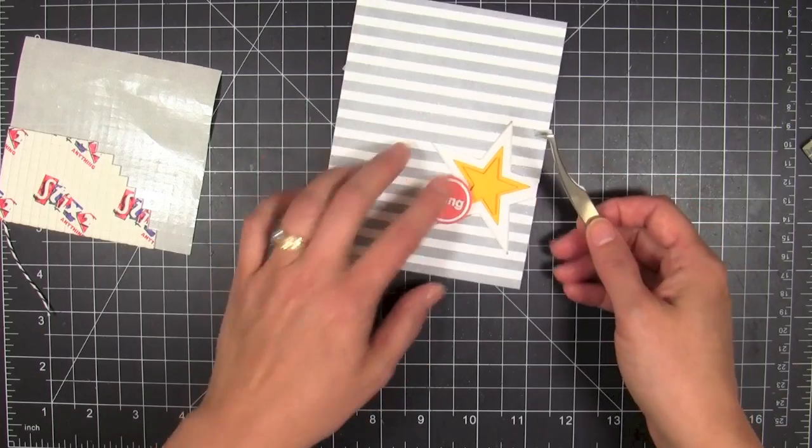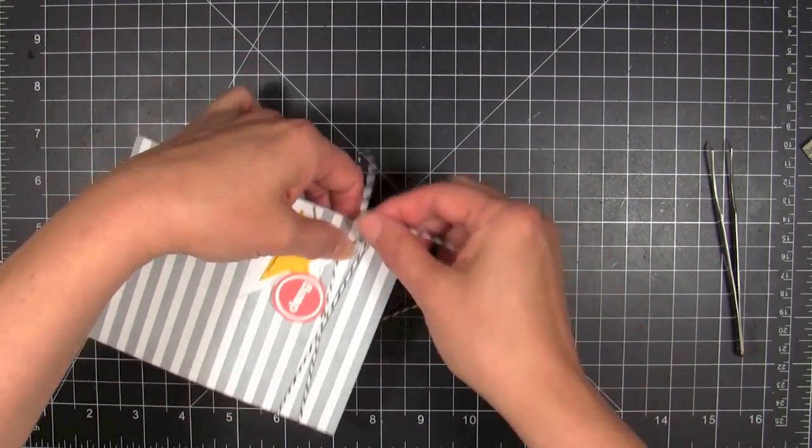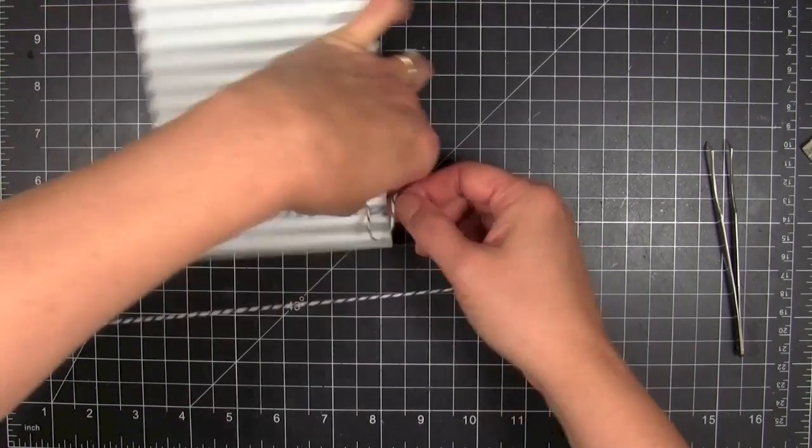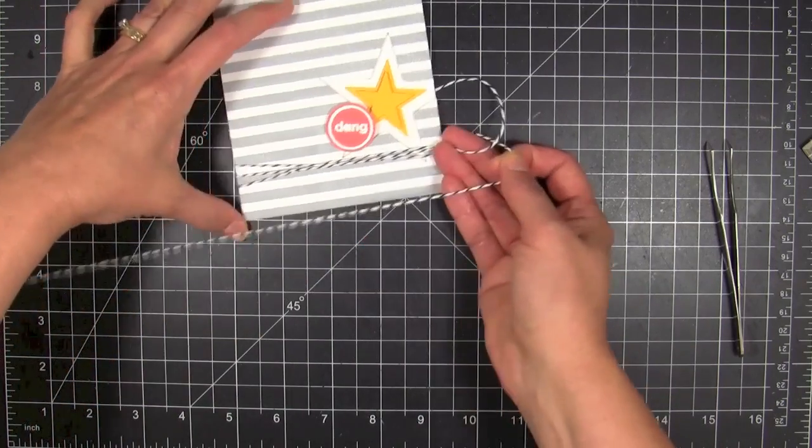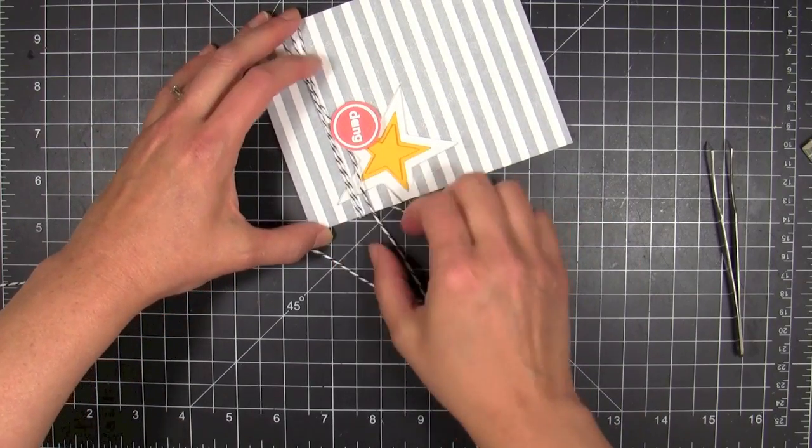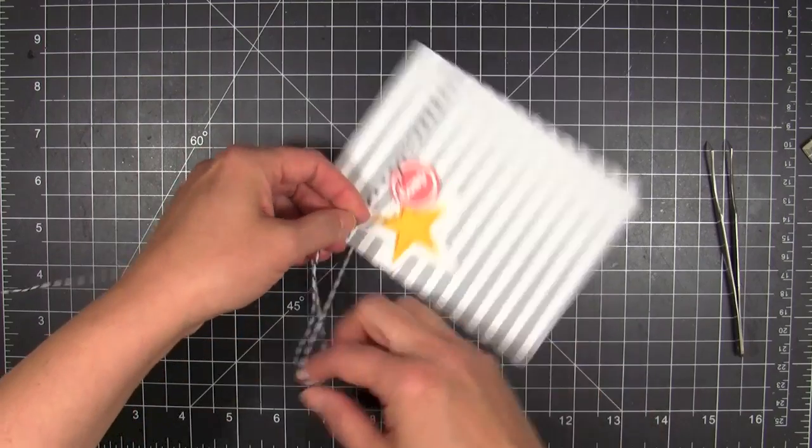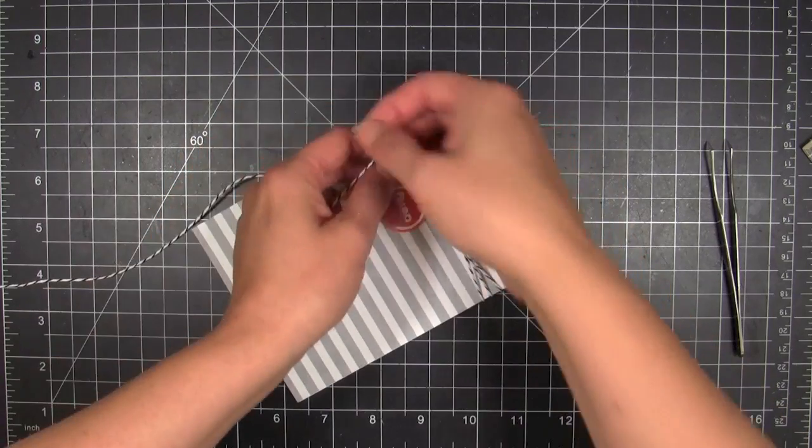Sometimes it's easier to do it this way than to put the foam dots on the back of the piece that you're mounting, if that makes any sense. Then I'm just going to take some Baker's twine and just wrap that around. I'm not even going to be careful about lining it up or getting it perfect, I'm just going to wrap it around really quick and get some extra pattern and color there.